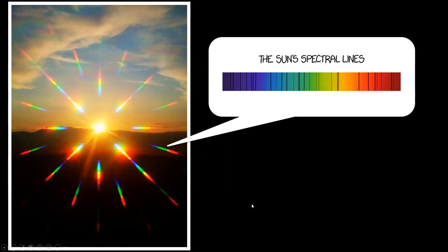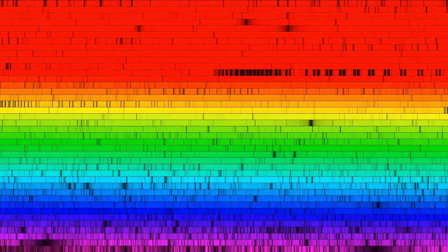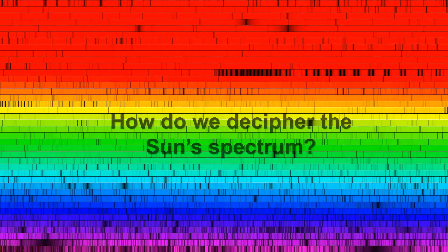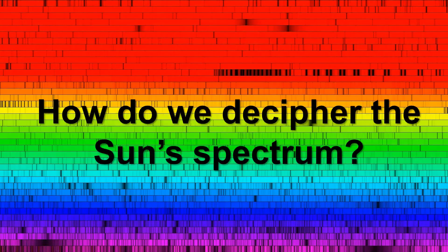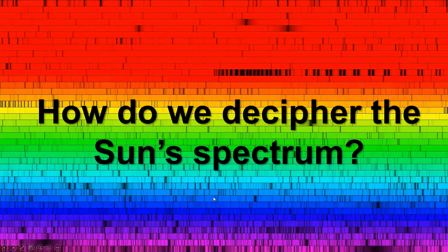That means we could use it to also determine what other stars are made out of as well. So this is the higher resolution spectrum of the sun, and the question we have when first getting started in spectroscopy is how do you decipher this to figure out what it all means in terms of the sun's composition,